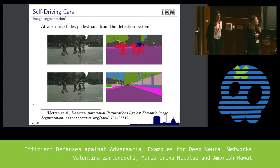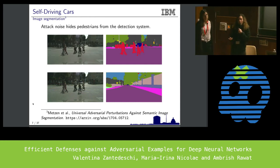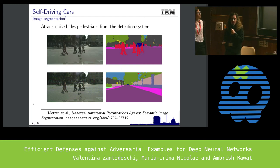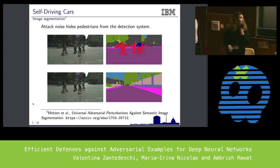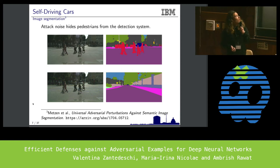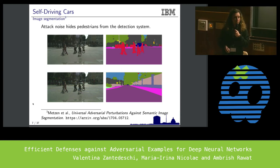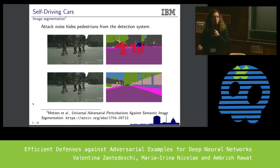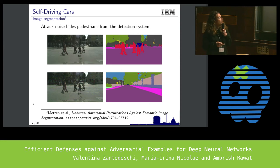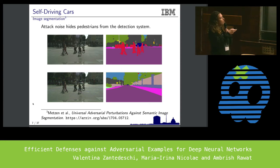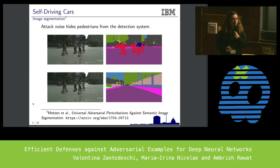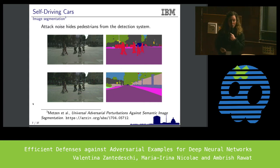There are many applications currently being developed that will be used in the following years. If you consider self-driving cars, we have a task of image segmentation where we recognize which class the pixels in an image belong to. The camera on top of a car, when noise is added, will fail to recognize pedestrians. I do not have to explain what are the implications of a car not slowing down when pedestrians are involved.